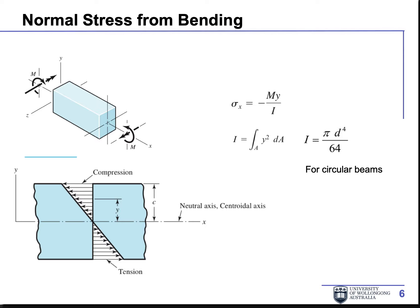The third case is bending, which causes two effects. First, there is a normal stress from the bending moment. The bending compresses the top of the geometry and pulls the bottom in tension. This stress is not evenly distributed — the center has no normal stress because it doesn't change size when the top and bottom are compressed or pulled. There are equations provided to calculate this.